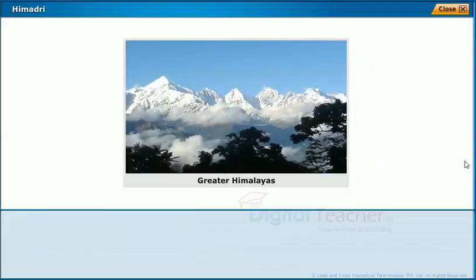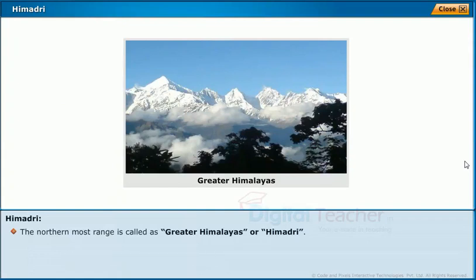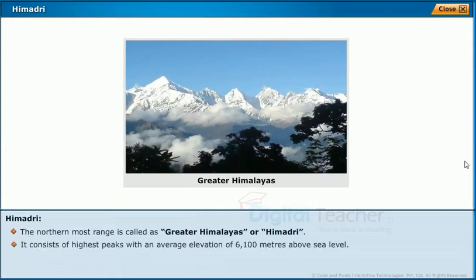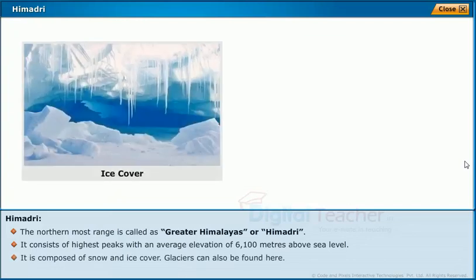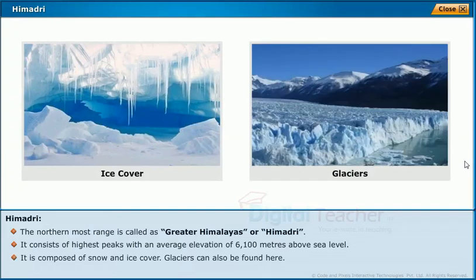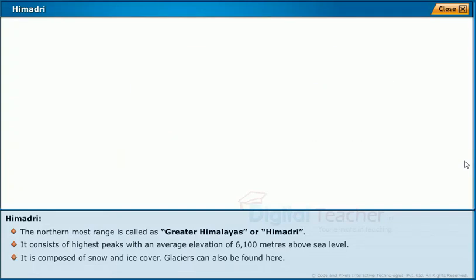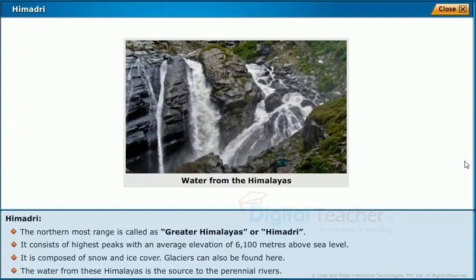Himadri: The northernmost range is called the Greater Himalayas or Himadri. It consists of the highest peaks with an average elevation of 6,100 meters above sea level. It is composed of snow and ice cover, and glaciers can also be found here. The water from these Himalayas is the source of the perennial rivers.